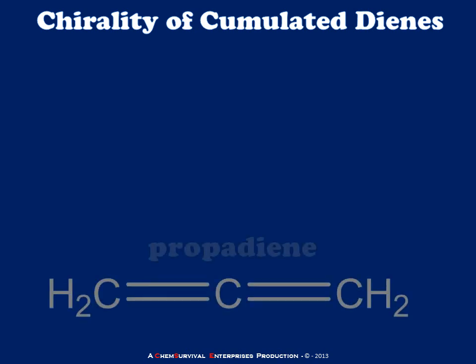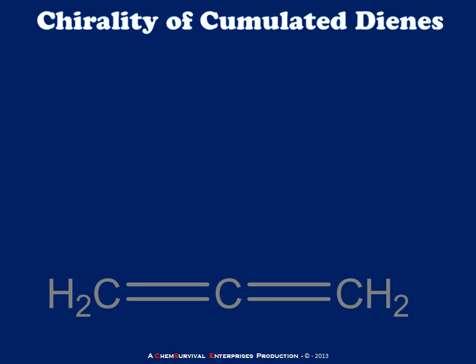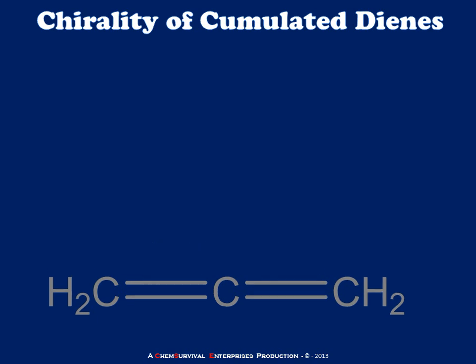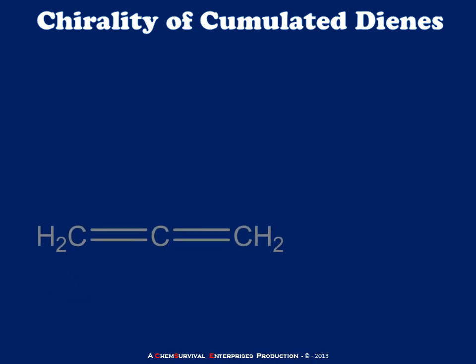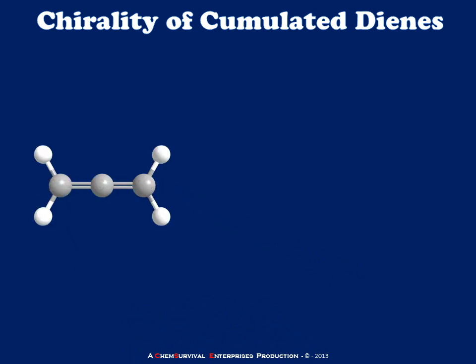Now that we've reviewed pi bonding and p orbitals, we're ready to take a look at the simplest of all cumulated dienes. This is a molecule known as propadiene. Notice that the carbon in the center has a pi bond to each of its neighbors on both sides. If I were to draw this molecule in a three-dimensional rendering, it would probably look something like this.